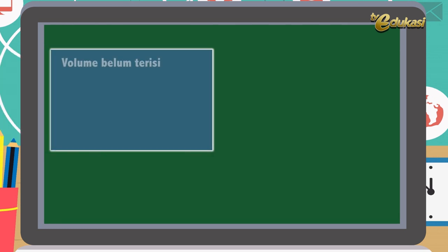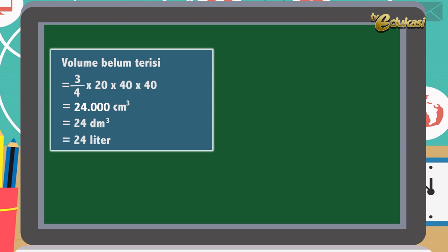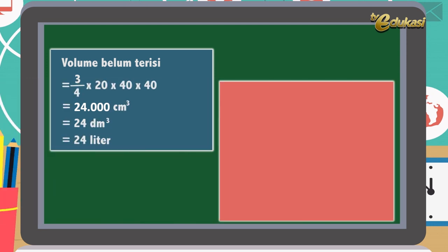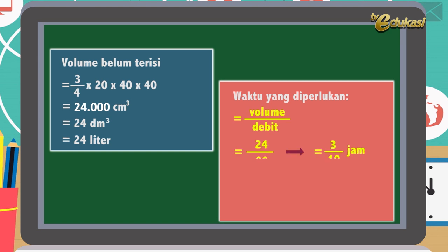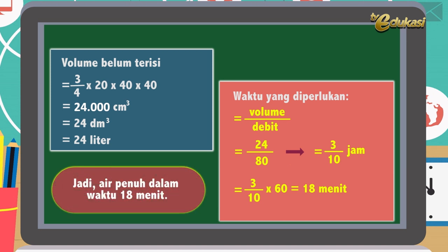Volume yang belum terisi sama dengan 3/4 × 20 × 40 × 40 = 24.000 cm³, atau sama dengan 24 dm³ atau sama dengan 24 liter. Waktu yang diperlukan = volume ÷ debit = 24 ÷ 80 = 3/10 jam, atau 3/10 × 60 = 18 menit. Kesimpulan: jadi air penuh dalam waktu 18 menit. Jelas ya anak-anak?